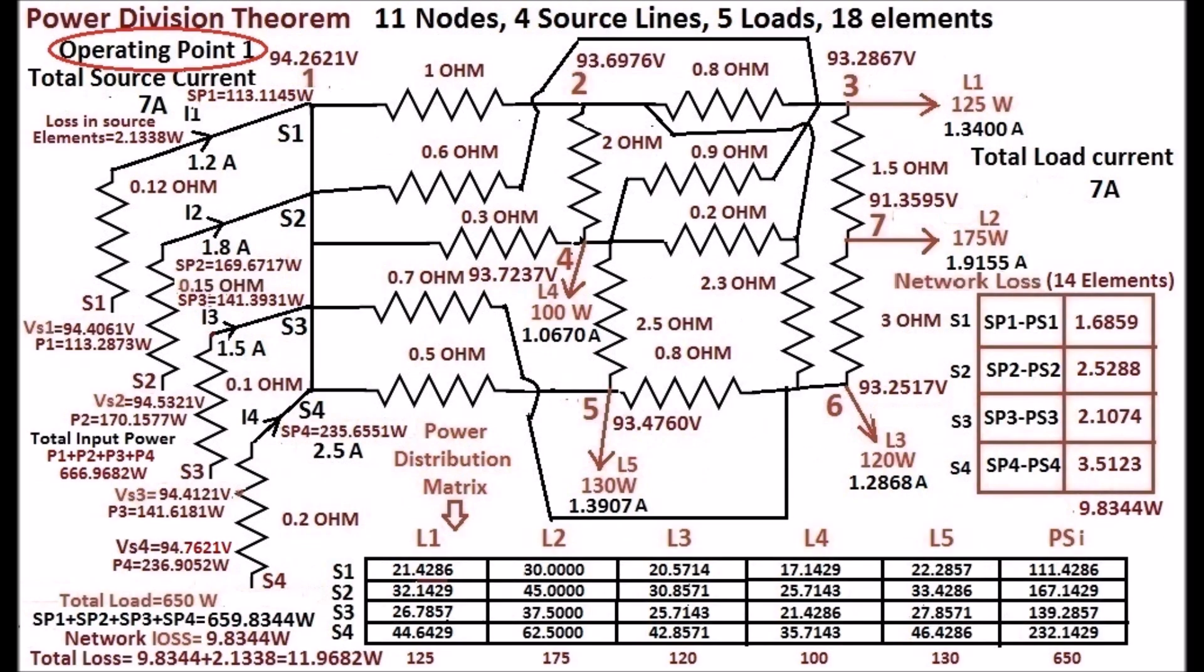See the display. At operating point 1, all source currents are entering into the network at node 1. Load 1 connected to node 3, load 2 connected to node 7, load 3 connected to node 6, load 4 connected to node 4, and load 5 connected to node 5 are shown in the display.